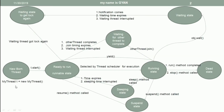The thread life cycle starts from the statement where we create a new thread and get a new born thread. After that, when we call the start method using the reference variable t, the newly born thread will be started and go to the ready to run state. The ready to run state is also called the runnable state.